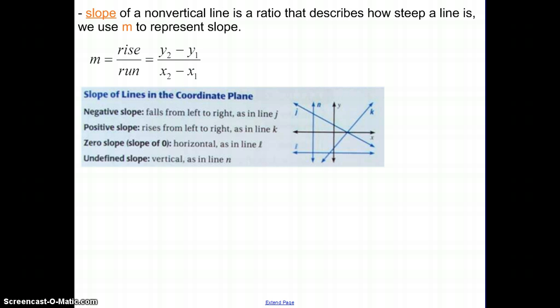This should be very familiar to you from Algebra 1, finding the slope of a line. The slope of a non-vertical line describes how steep a line is. We use the lowercase m to represent the slope. The proper definition, or at least the most common definition, is rise over run - how much you're going up compared to how much you're going over.